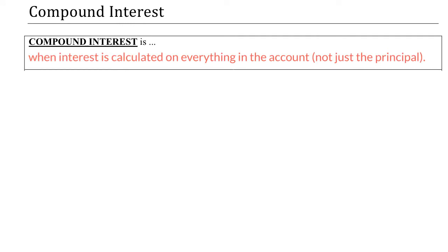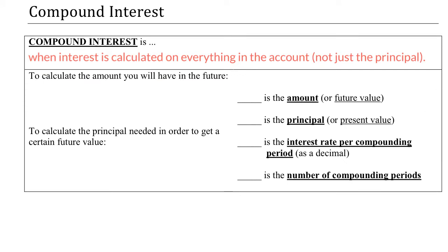Unlike simple interest, compound interest is when interest is calculated on everything in the account, not just the principal. There are two ways we can think about compound interest: the first way is to calculate the amount you will have in the future, and the second way is to calculate the principal needed in order to get a certain future value.